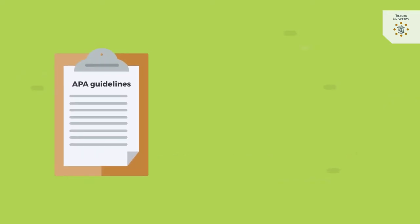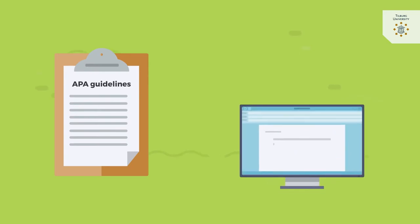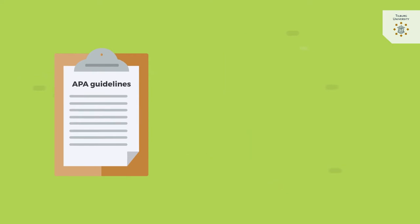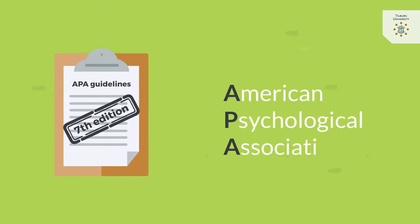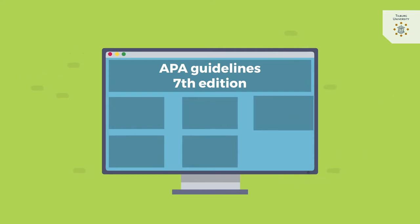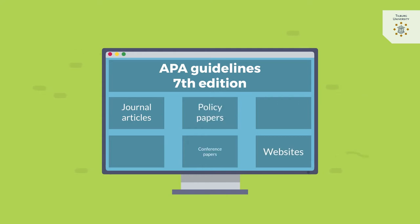In this knowledge clip we will explain some basic guidelines on how to cite the documents that you use to support what you write in your paper. The information is based on the seventh edition of the APA guidelines as presented by APA, the American Psychological Association. APA presents guidelines for the citing of all kinds of documents, such as journal articles, websites, and policy papers. In this knowledge clip we will focus on the two most cited types of documents: journal articles and books.